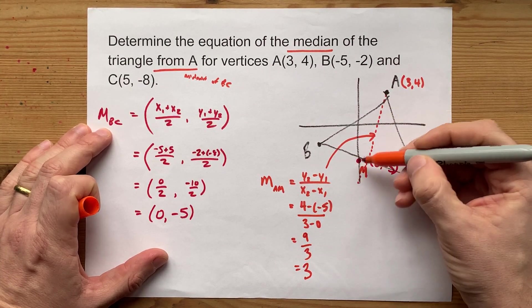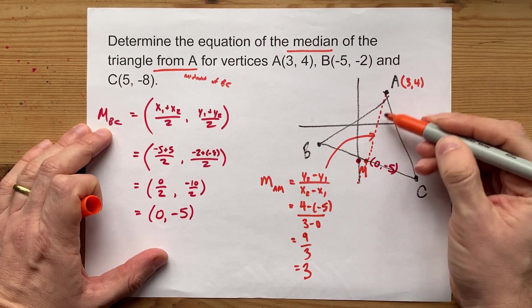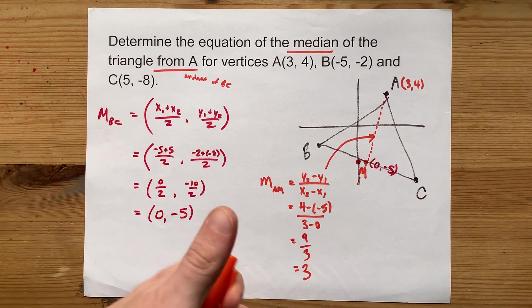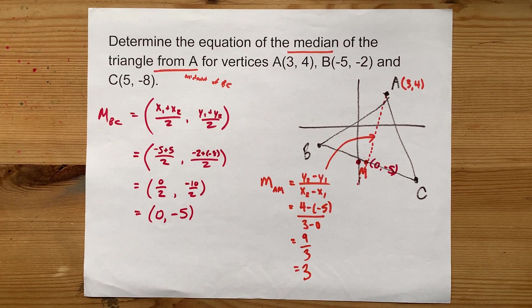Does it make sense that that slope is 3? Well, yeah, it goes up and to the right, so it's a positive slope. And it's kind of steep, so it might be a big number like 3. I like that.